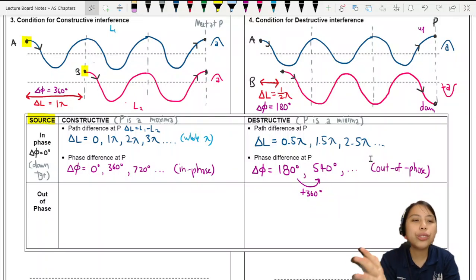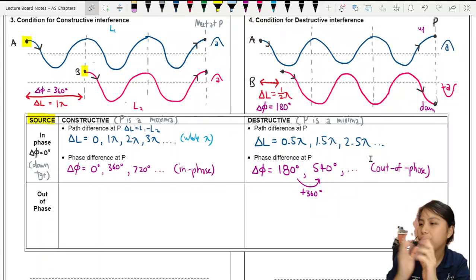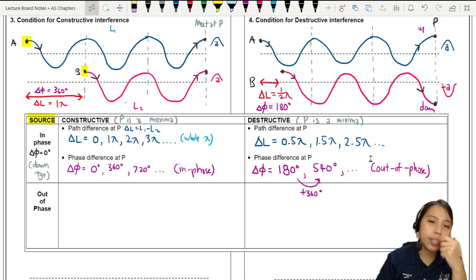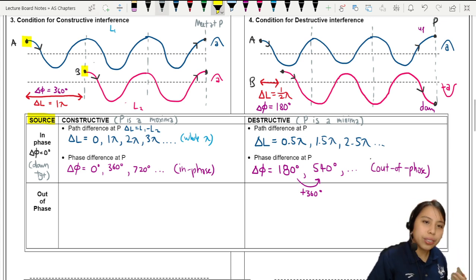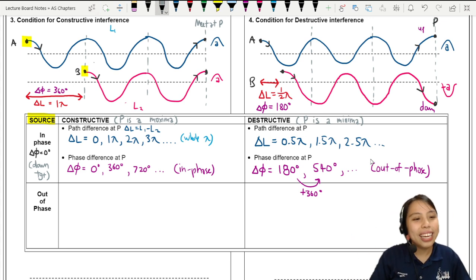In the previous video, we looked at the conditions for constructive and destructive interference. Most of the time, Cambridge will say that because it's physically easier to do it, the sources will start off in phase.